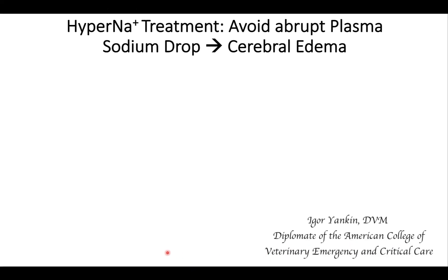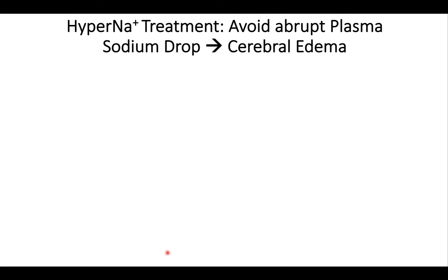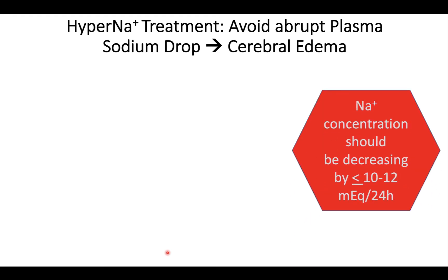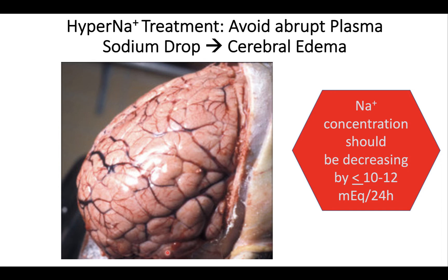We're going to switch gears and talk about the treatment of hypernatremia — elevated sodium. The most important concept is that you don't want to quickly change the sodium concentration. You don't want to drop it from high to normal too quickly because that will lead to cerebral edema. As a rule of thumb, sodium concentration should be decreased by no more than 10 to 12 milliequivalents per 24 hours. Otherwise, the osmolality in the plasma will be too low compared to the osmolality within the brain tissue, and this discrepancy will lead to shifting of free water from the intravascular space to the interstitium, including the brain, causing severe cerebral edema and brain swelling. Since the brain is contained in the skull, this will lead to intracranial hypertension.